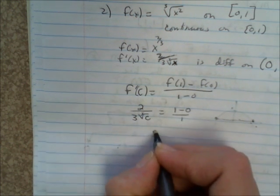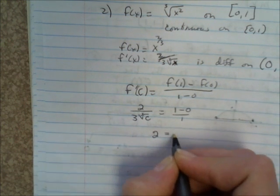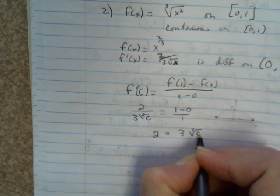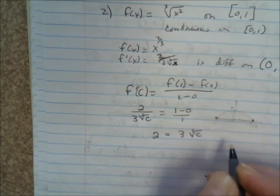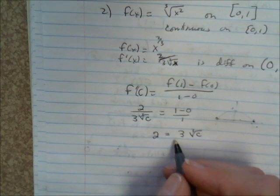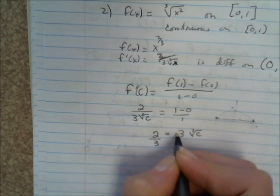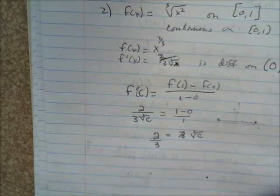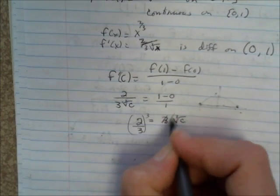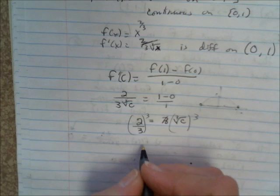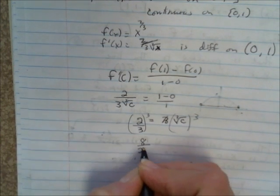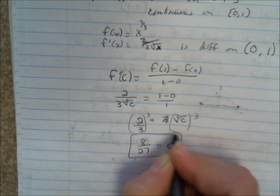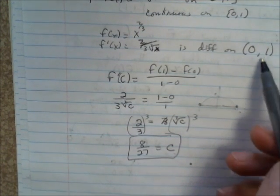We have 2 over cubed root of c equals 1. Cross-multiply: 2 equals 3 cubed root of c. Divide both sides by 3: 2/3 equals the cubed root of c. To get rid of the cubed root, cube each side. 2 cubed is 8, 3 cubed is 27, so 8/27 equals c. There's our c value in the interval between 0 and 1.